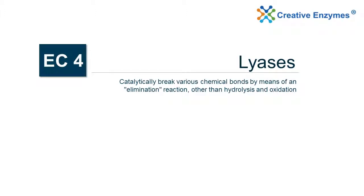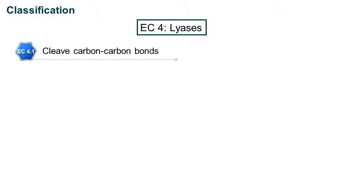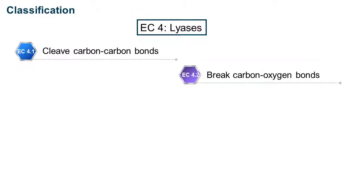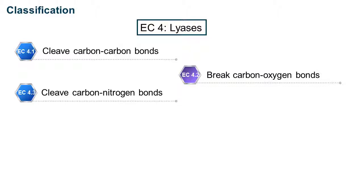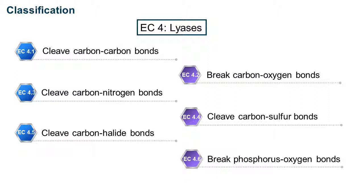EC4 — Lyases. Lyases catalytically break various chemical bonds by means of an elimination reaction, other than hydrolysis and oxidation. The reaction is shown below. Classification: EC4.1 cleaves carbon-carbon bonds; EC4.2 breaks carbon-oxygen bonds; EC4.3 cleaves carbon-nitrogen bonds; EC4.4 cleaves carbon-sulfur bonds; EC4.5 cleaves carbon-halide bonds; EC4.6 breaks phosphorus-oxygen bonds; EC4.7 covers other lyases.